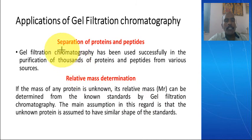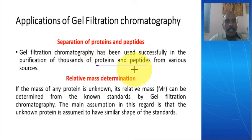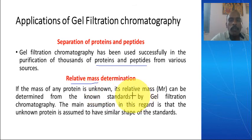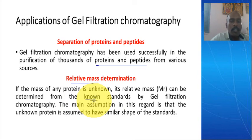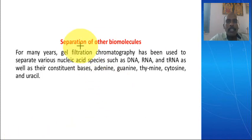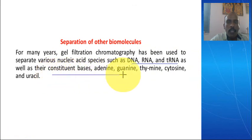Applications of gel filtration chromatography: We can easily isolate proteins and peptides from various sources. We can also determine relative mass — by comparing with a known substance, we can calculate the relative mass of an unknown substance. We can also separate DNA, RNA, tRNA, and other nucleotide bases such as adenine and guanine.